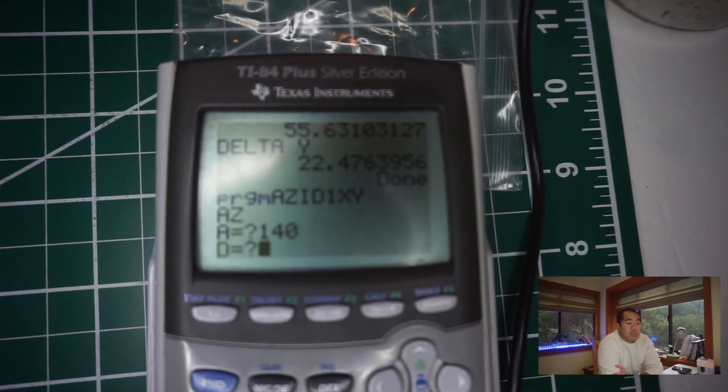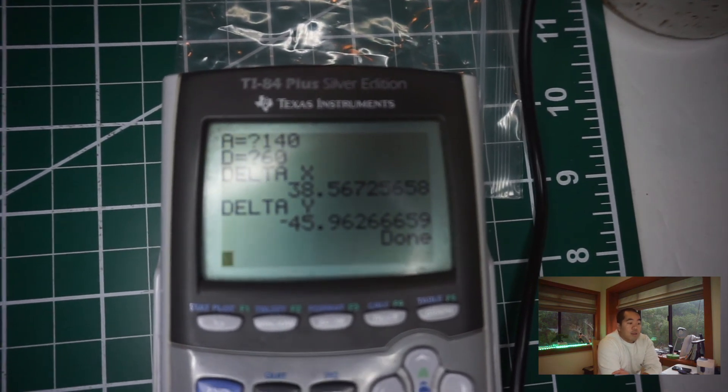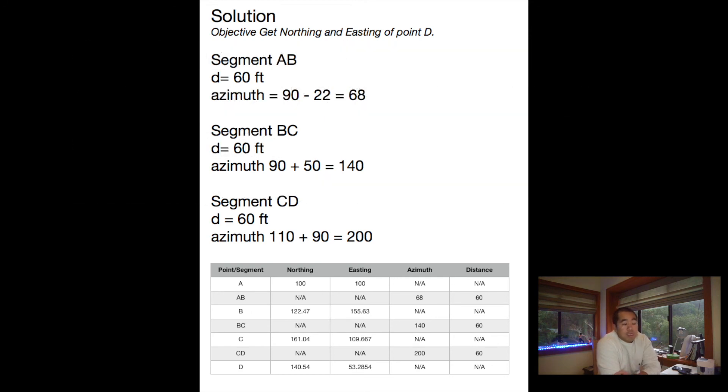From azimuth angle 140 and a distance of 60, we use our calculator and we're going to use the equation Azi D1 XY, which basically means azimuth and then distance, and then the one is kind of a separator and then we're going to go into xy coordinates or in this case northing and easting. It's really northing and easting but I just chose xy just because it made sense in my head. We're going to get point C, a northing of 161.04 and easting of 109.667.